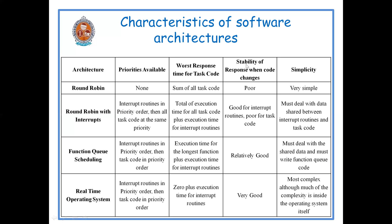The next characteristic is stability of response when the code changes. In round robin architecture it is very poor. In round robin with interrupts it is good for interrupt routines but somewhat poor for task code. In function queue scheduling it is relatively good for both interrupts and task code. In real time operating system it is very good for both, as high priority tasks receive processor time immediately.